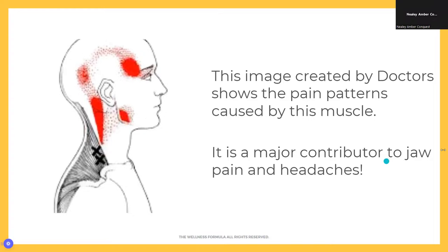This image shows a mapping of all the trigger point patterns in the body. The X's mark where the muscle is — but the problem isn't felt there. The pain is felt going up the neck, which might feel like a stiff neck, then around the head and into a big pain just above the eye — sometimes feeling like a migraine, usually on one side. It also causes pain in the jaw, all coming from this one muscle.